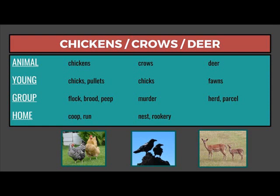The young of crows are chicks. A group of crows would be a murder. The home of crows would be a nest or rookery. The young of deer are fawns. A group of deer is a herd or parcel. As to their home, they live in a range, but they don't have a particular dwelling.